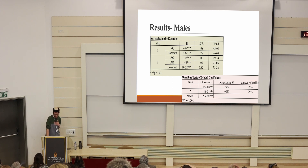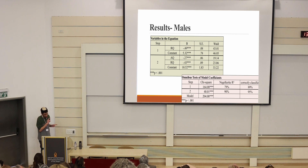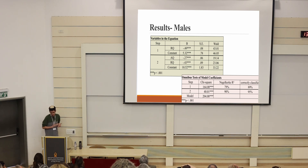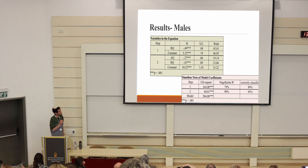To examine potential gender differences in the predictive value of the AQ and the RQ, a separate analysis was conducted for males and females. For males, the results showed a different pattern: the RQ — the parent report — entered in step 1, whereas in the entire sample, the AQ — the self-report — entered in step 1. Here, the self-report entered only in step 2. Everything was significant, and the correct classification rate was very similar to the entire sample — again, 95%. The interesting finding is that the RQ, the parent report, entered first for males.